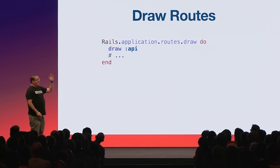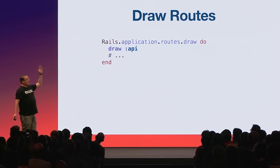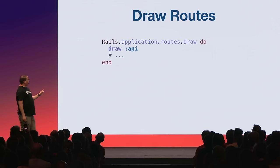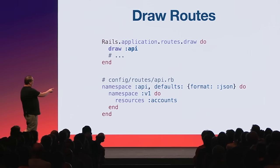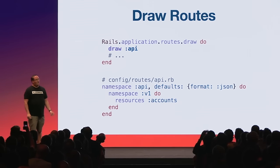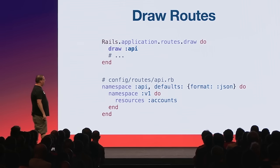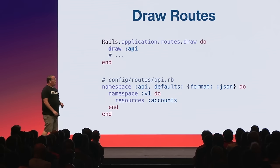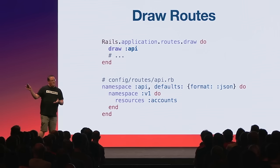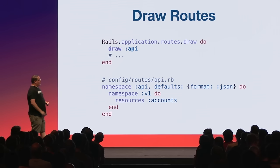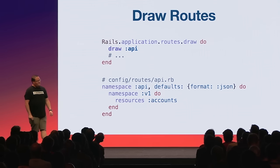Another routing feature is the ability to draw routes from other files. Normally you stuff all routes into one file that gets longer and more complex over time. With `draw`, you can have certain routes written in different files to organize things better. For an API, you can put all API routes in `config/routes/api.rb`, organizing them separately from the main application routes. You could put admin routes in a different file, or in a marketplace put storefront routes in one file and back-end routes in another.